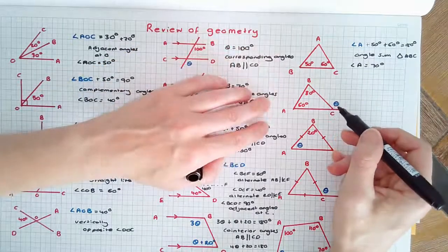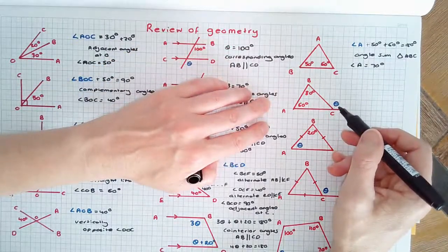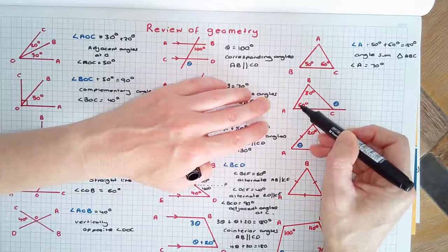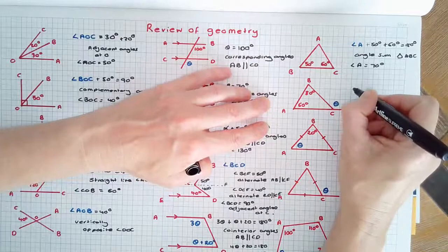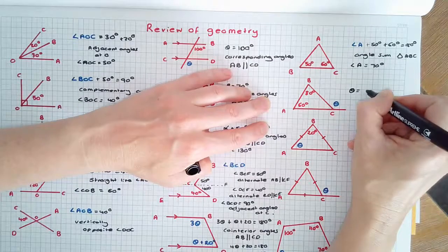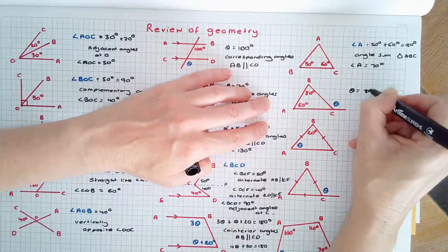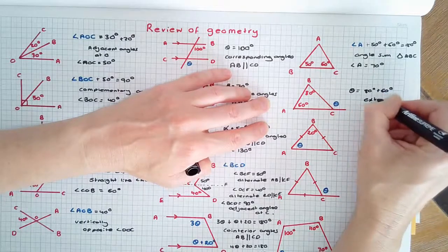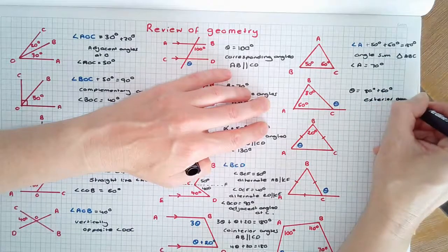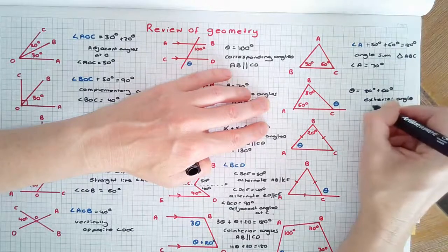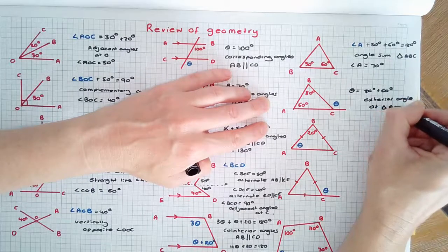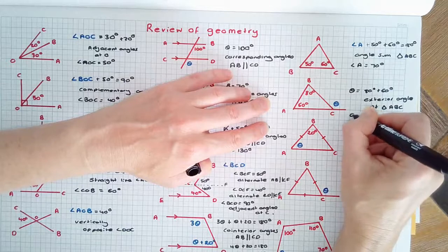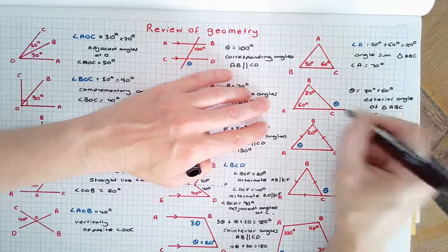An exterior angle of a triangle equals the sum of the opposite interior angles. So here, theta equals 80 degrees plus 60 degrees because of the exterior angle of triangle ABC. Therefore theta equals 140 degrees.